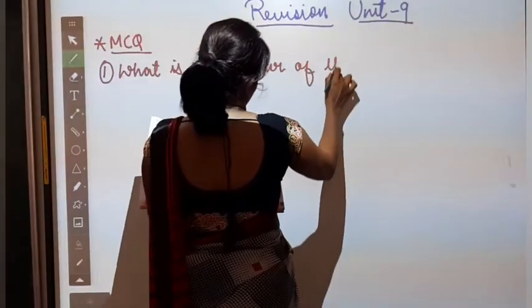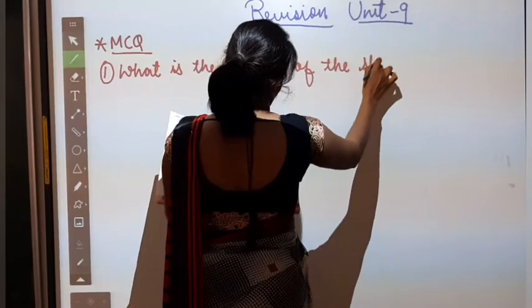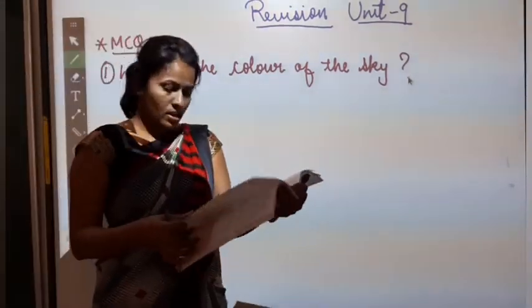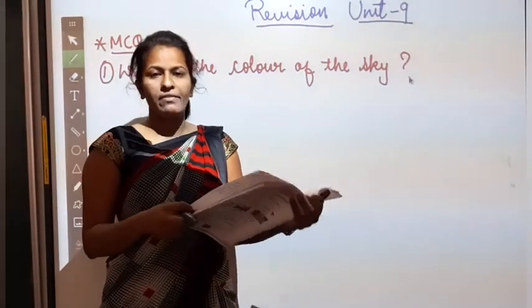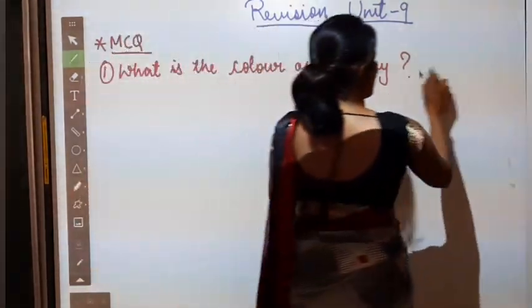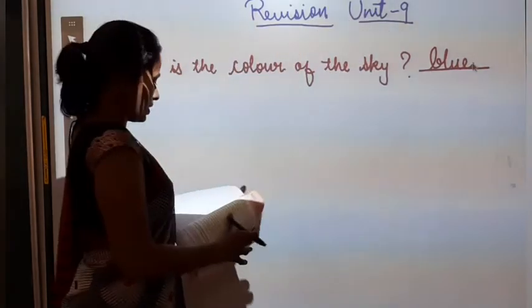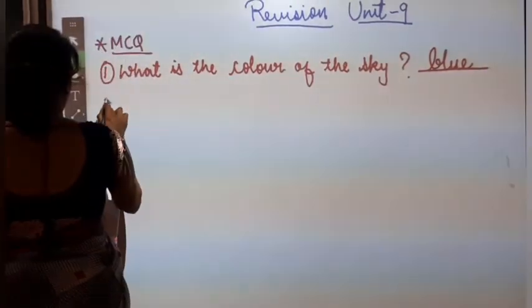What is the color of the sky? So what is the color of the sky? Options are blue, green, white, black. So you know very well that the color of the sky is blue. Okay? Number 2.